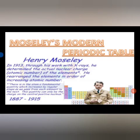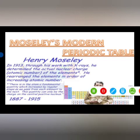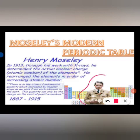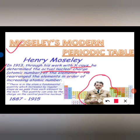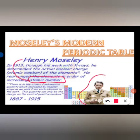The limitations of Mendeleev's periodic table were solved by Henry Moseley. In 1913, through his work with X-rays, he determined the actual nuclear charge — the atomic number — of elements and arranged them in order of increasing atomic number. The major difference is that Mendeleev's table was based on increasing atomic mass, whereas Moseley's periodic table was based on atomic number.